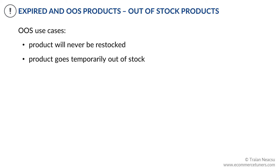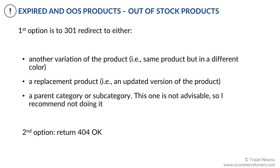Let's discuss out-of-stock products. There are two main use cases: the product will never be restocked, or the product goes only temporarily out-of-stock. If the product will never be restocked, you have a couple of options. The first is 301 redirects to one of the following pages: another variation of the product, a replacement product such as an updated version, or to a parent category or subcategory — though this last option is not really advisable.